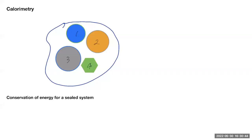In a previous lecture, we introduced the concept of specific heat. How does one measure the specific heat of an unknown material? One common technique is called calorimetry.